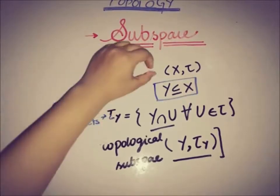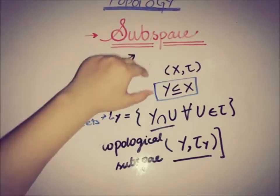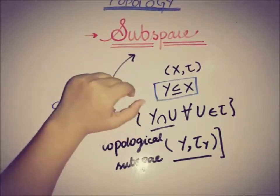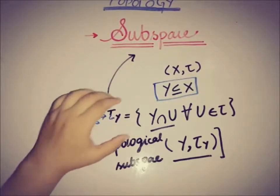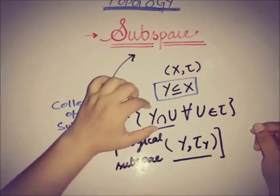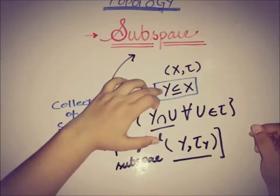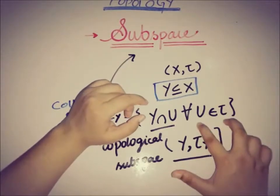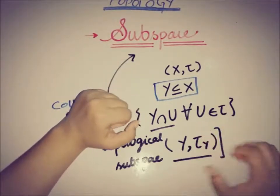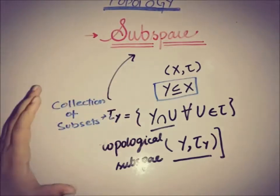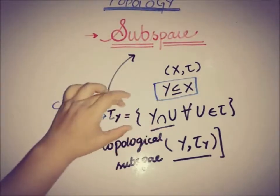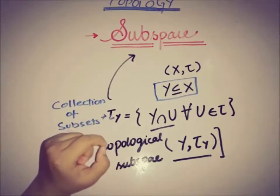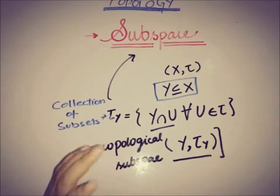Again, if x and tau is a topological space and we take a subset y of x, we define a collection such that the intersection of this subset and the open sets of x forms a collection that is said to be a topological subspace.